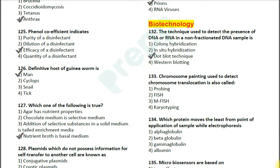Question number 133: Chromosome painting used to detect chromosome translocation is also called — option 1: probing; option 2: FISH; option 3: AMPFISH; option 4: karyotyping. The correct answer is option 2 — FISH, which stands for Fluorescence In Situ Hybridization.